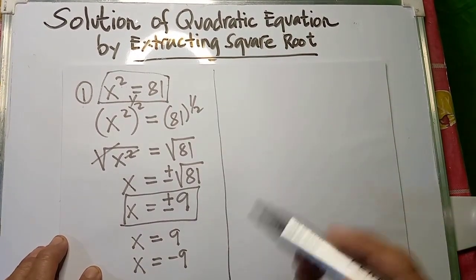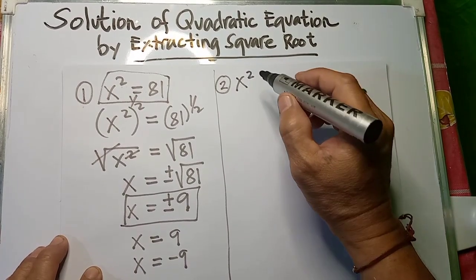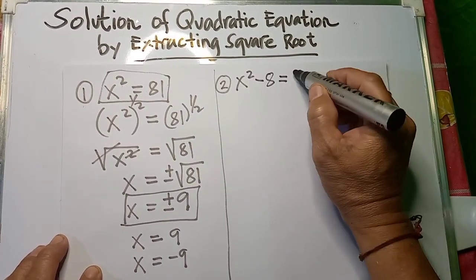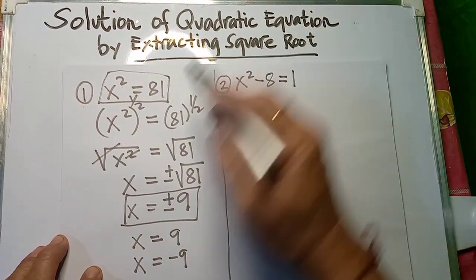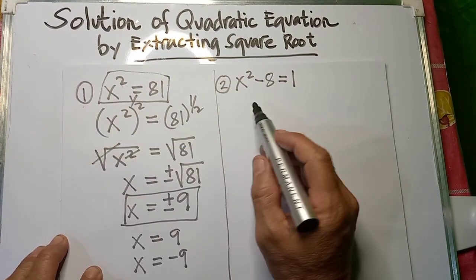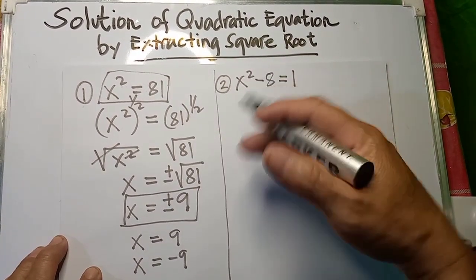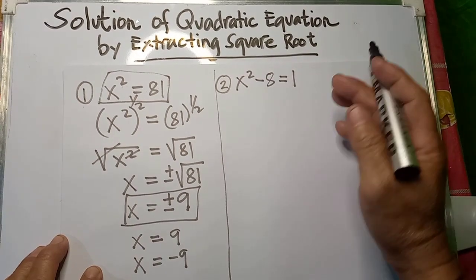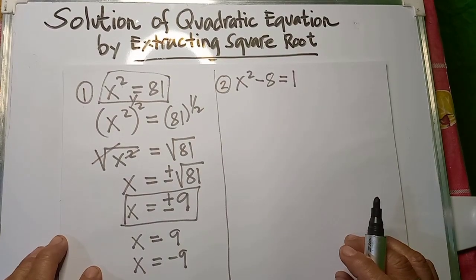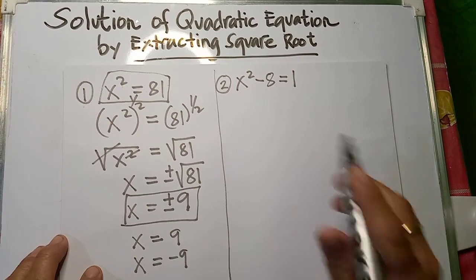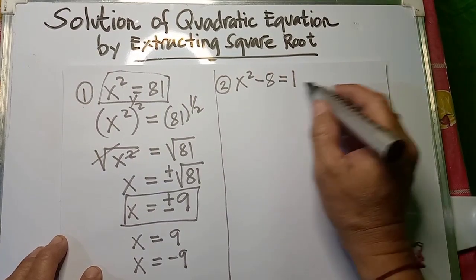Another example. Suppose we have example number 2: x squared minus 8 is equal to 1. As we notice, the numerical coefficient of x squared in this first two examples is still equal to 1. So no need for us to adjust that — but I will give you another example later on where the coefficient is not equal to 1, to show you how we manage that.